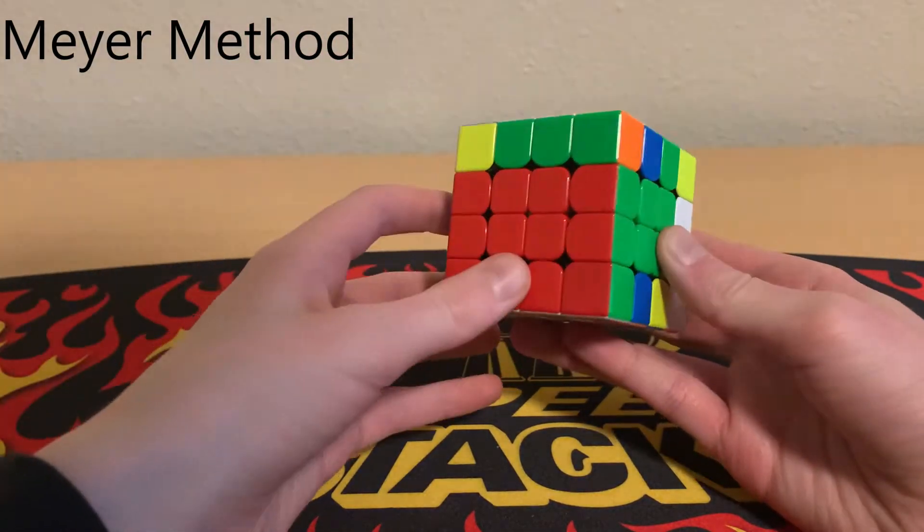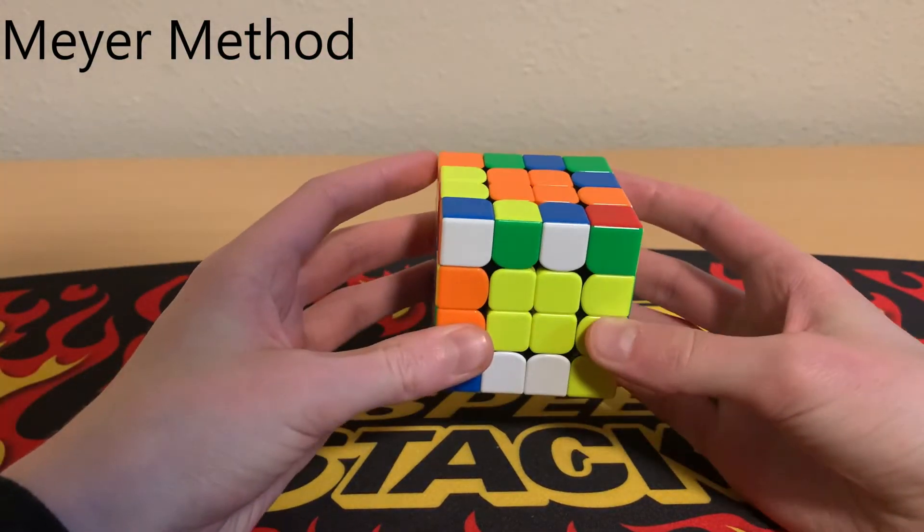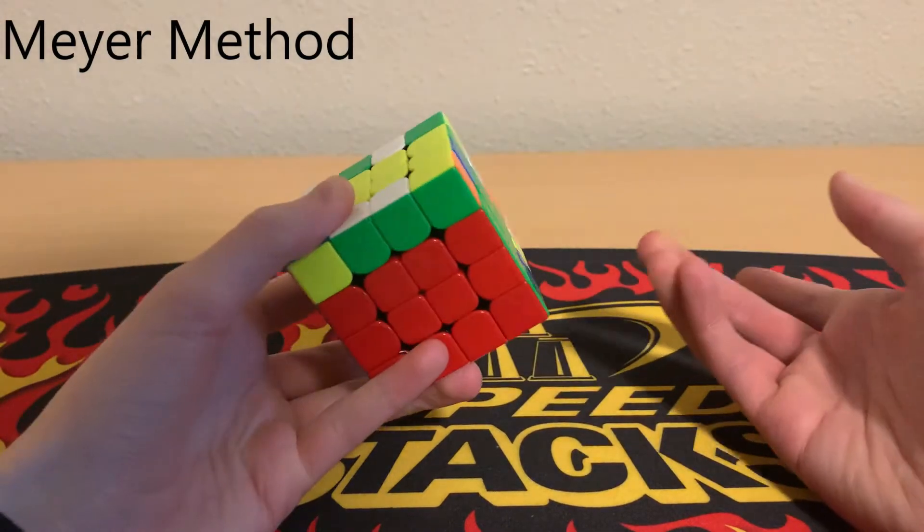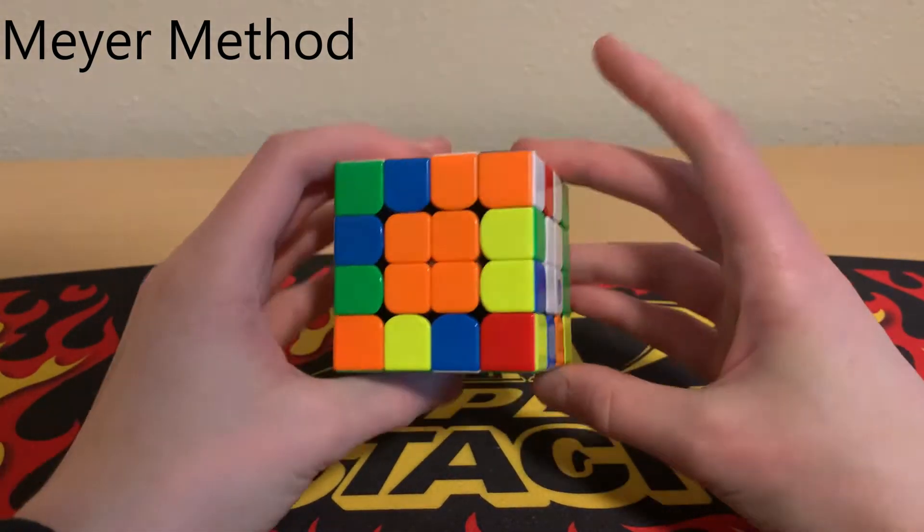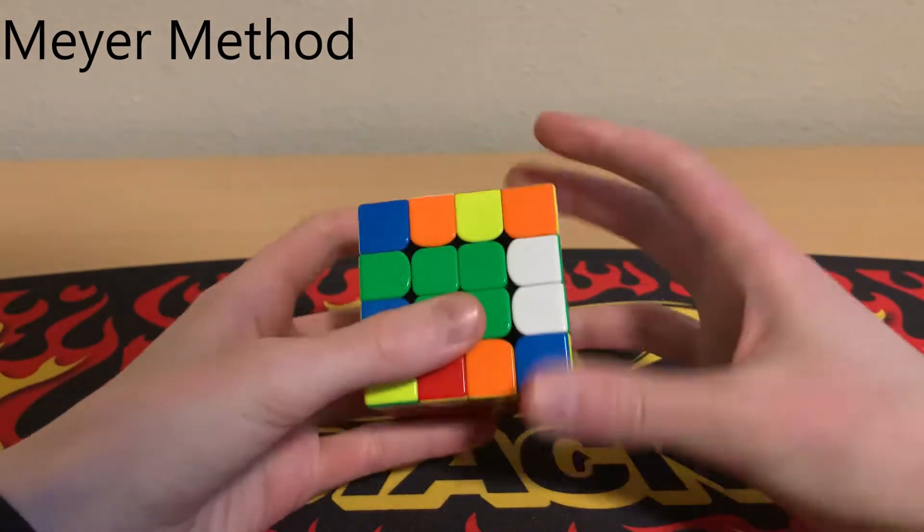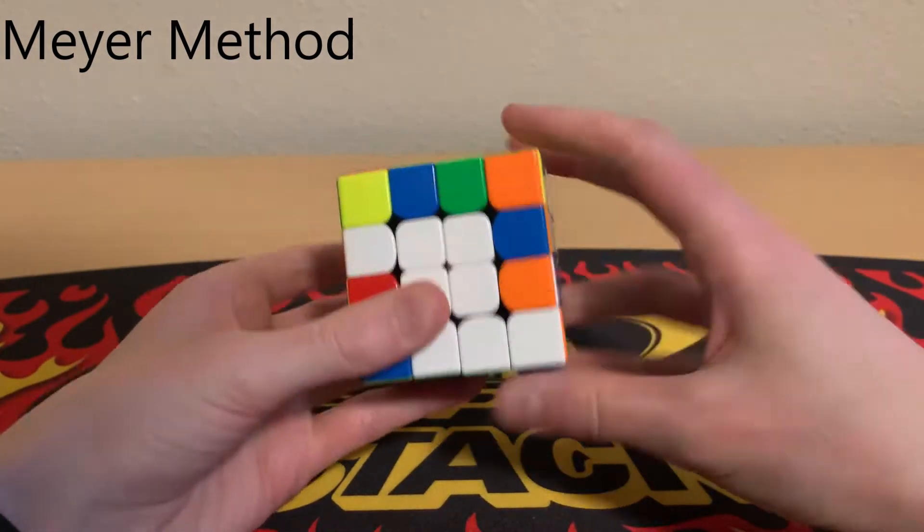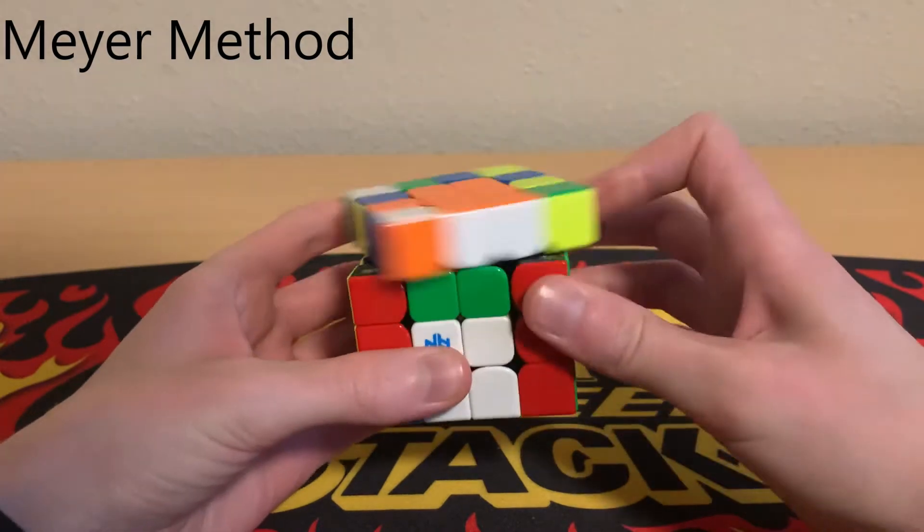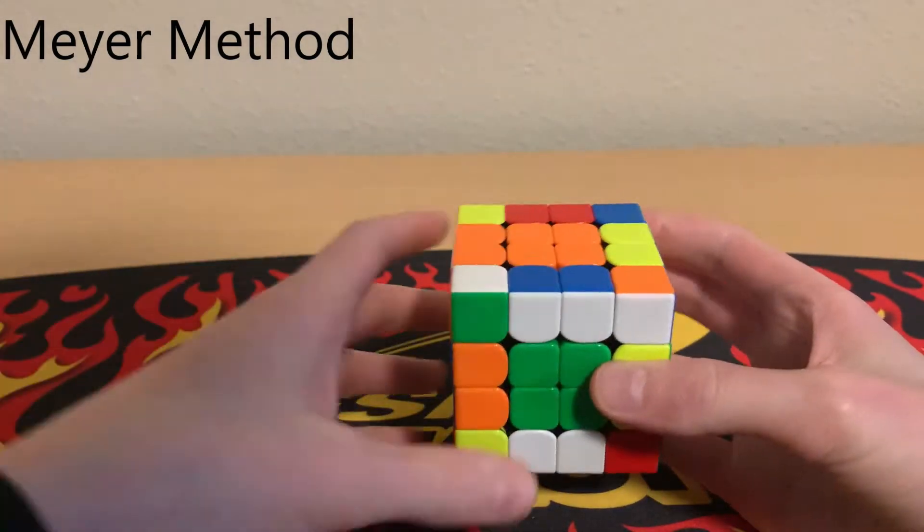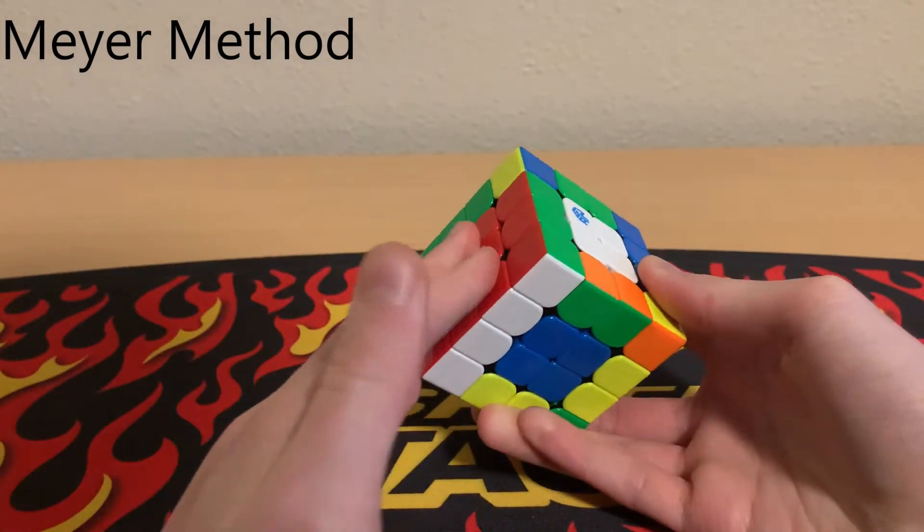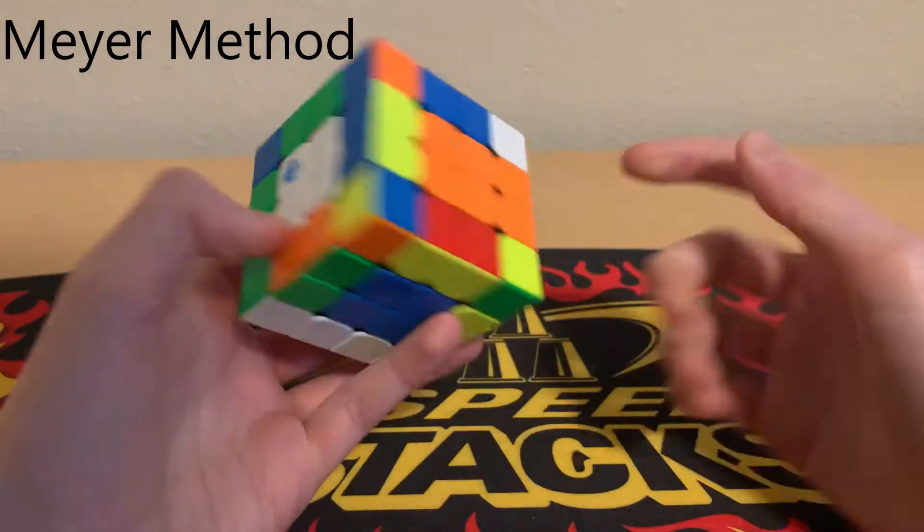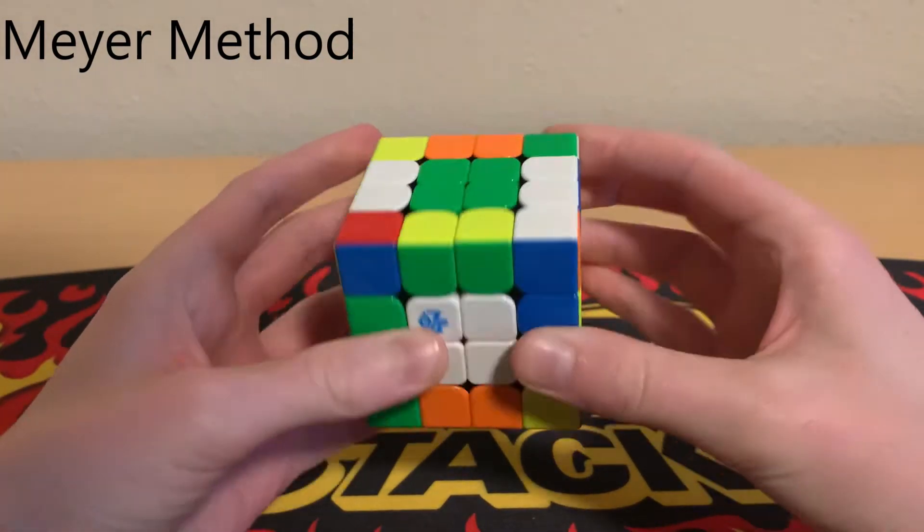Then we put that piece here on top of our first block and we're going to rotate so that our first block is on the back of the bottom like this. Now you can do your regular edge pairing. Whatever edge pairing method you use, go ahead and use it here to pair all your edges. Once you've paired up all the edges, rotate back so that your first block is on the left and start building your next block like in standard Roux.